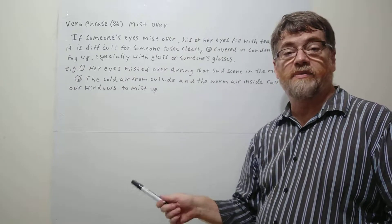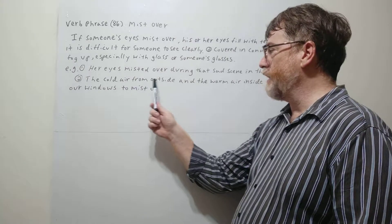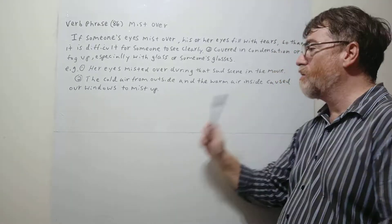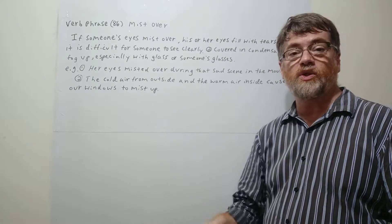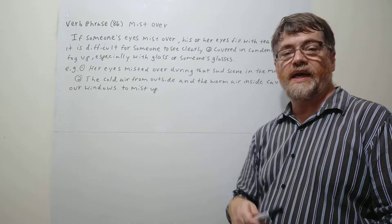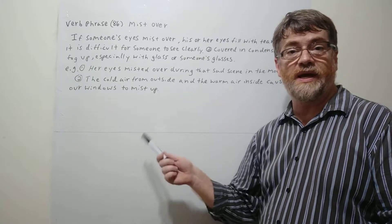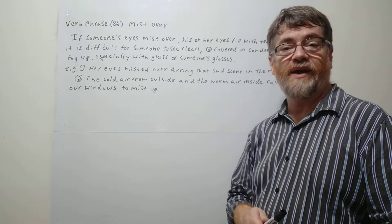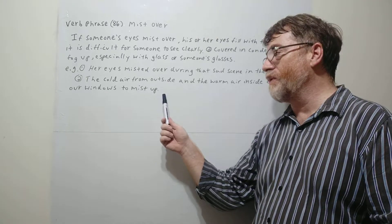And let's look at example number two. The cold air from outside and the warm air inside caused our windows to mist up. Yeah, so especially if you lived in the northern hemisphere, you'd see this all the time. Okay, anyway, especially when the weather gets cooler.